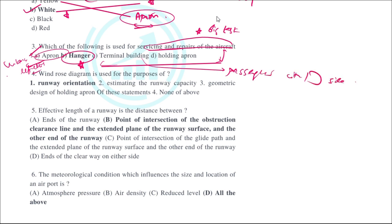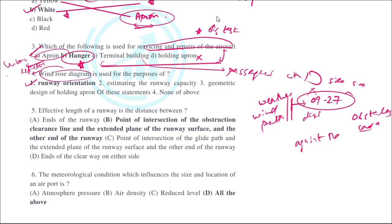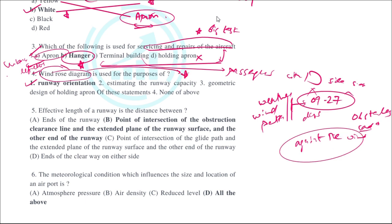The wind rose diagram is used for the purpose of runway orientation. Weather conditions, especially wind patterns, are taken into consideration for runway orientation. Most runways are oriented 09-27 but depending on obstacles, land availability, and other factors, the primary preference is always the direction against the wind. Wind rose diagrams are used for this purpose.